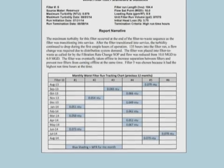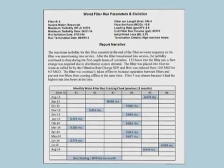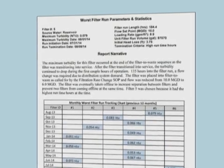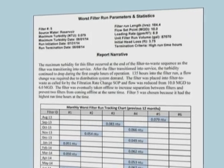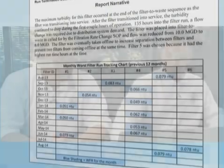This report includes key filter run statistics and a narrative describing the key events that occurred throughout the filter run. Another thing we've implemented as part of our filter profiling program is to track the worst performing filter based on turbidity over the previous 12 months. We found this to be a very effective tool to diagnose longer-term issues relating to filtration that you may not pick up by looking at just one filter profile. We were able to tie variability in turbidity to a problem we had with the sludge collection system, and make adjustments before it became something that was impacting water quality.